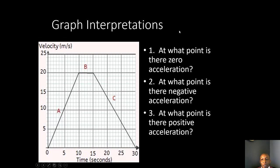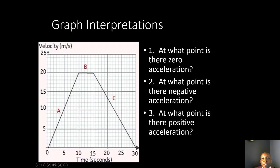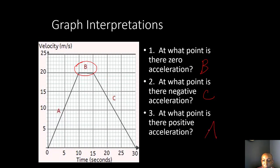Now let's look at some graph interpretation questions. At what point is there zero acceleration? At point B, we have a straight line going across, so the answer is point B. At what point is there negative acceleration? Negative acceleration is when the line is going down — that's at point C. At what point is there positive acceleration? The line is going up and increasing over time — that's at point A.